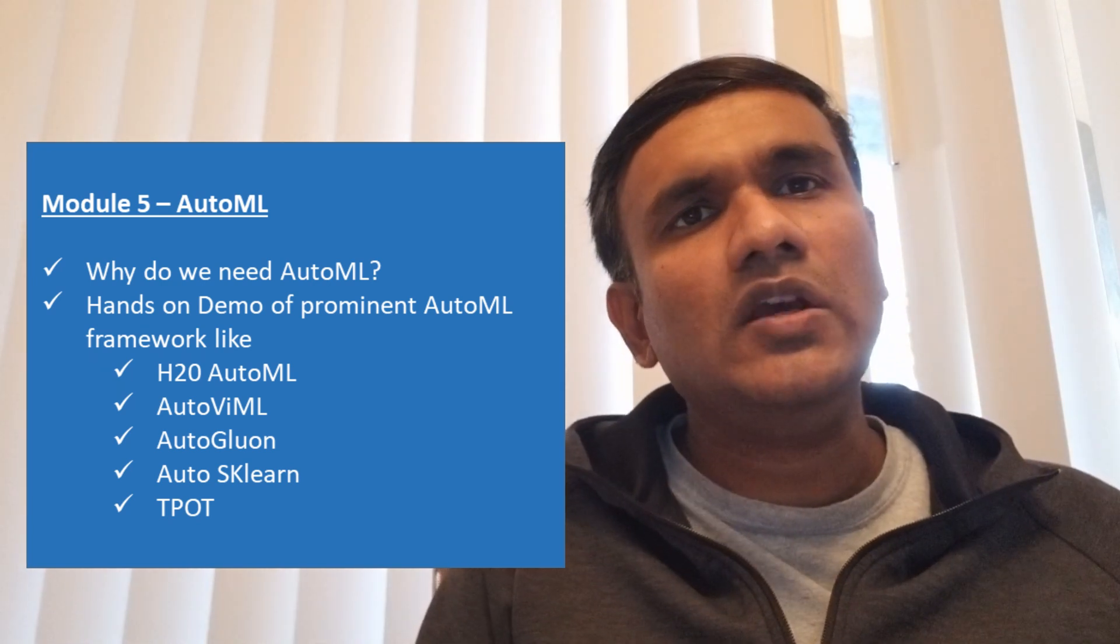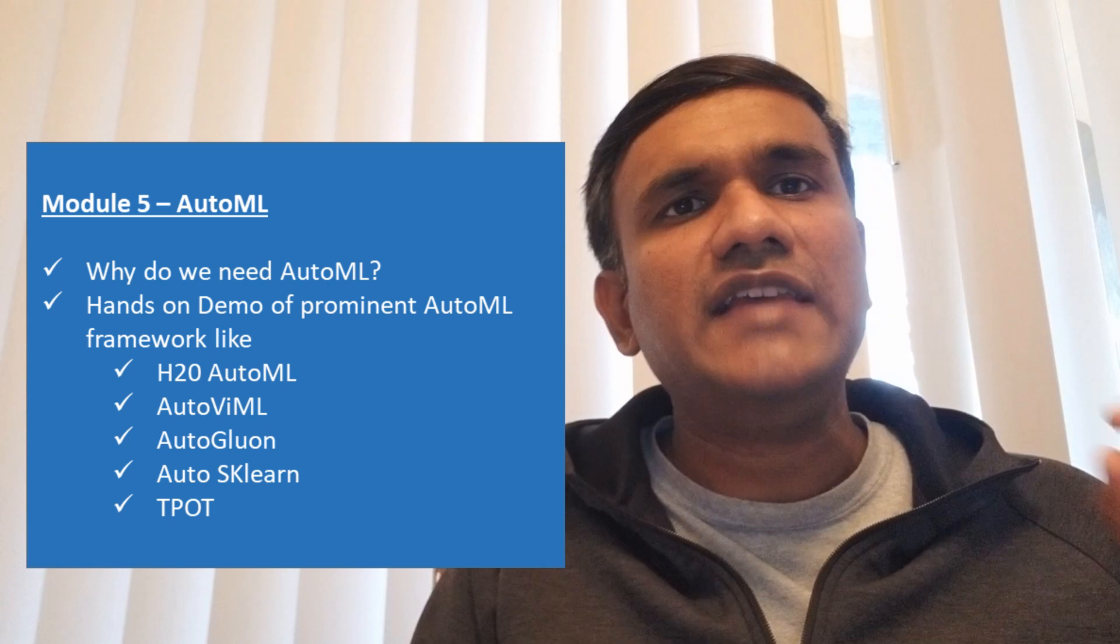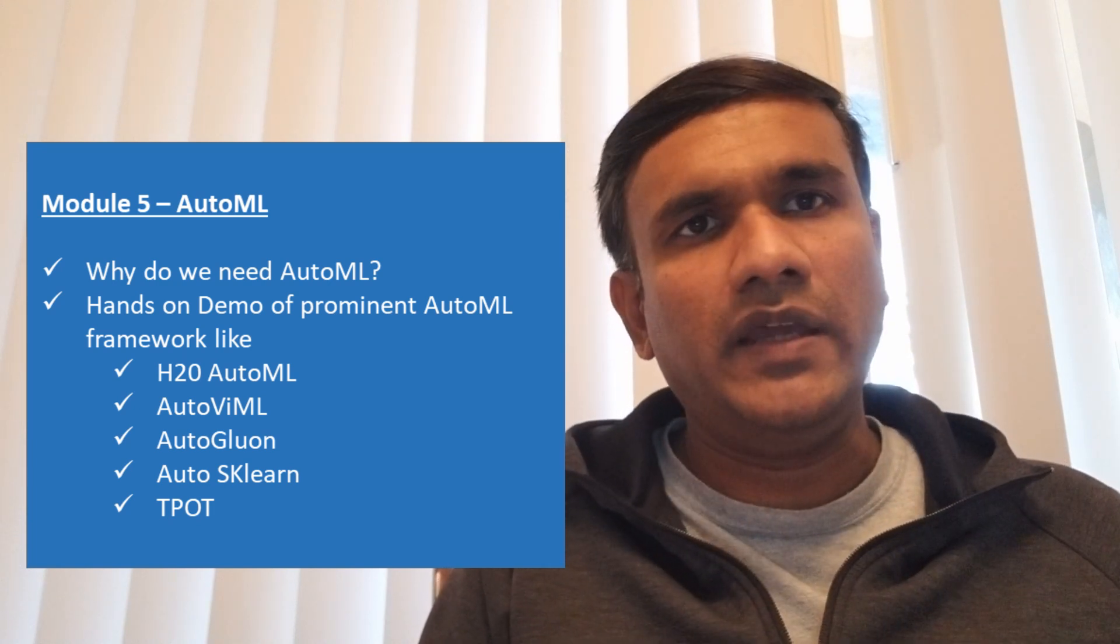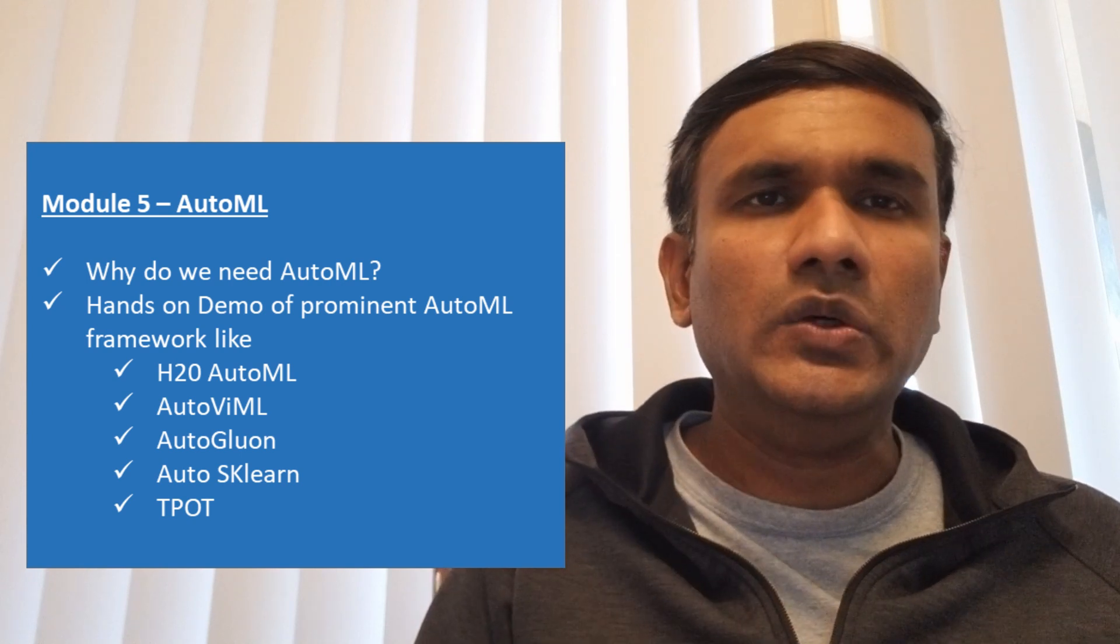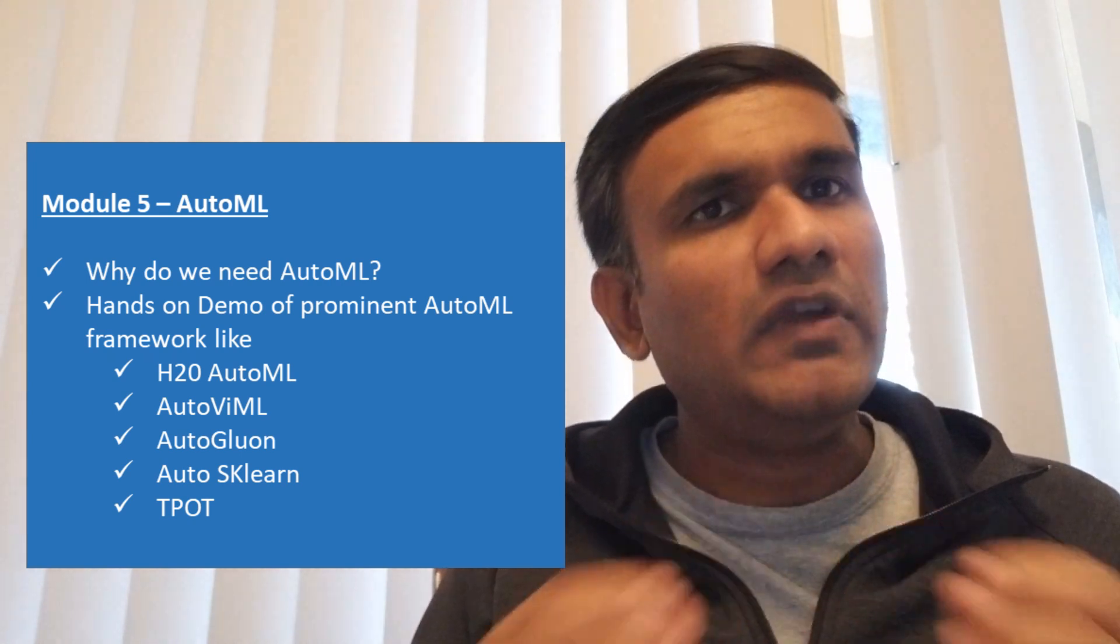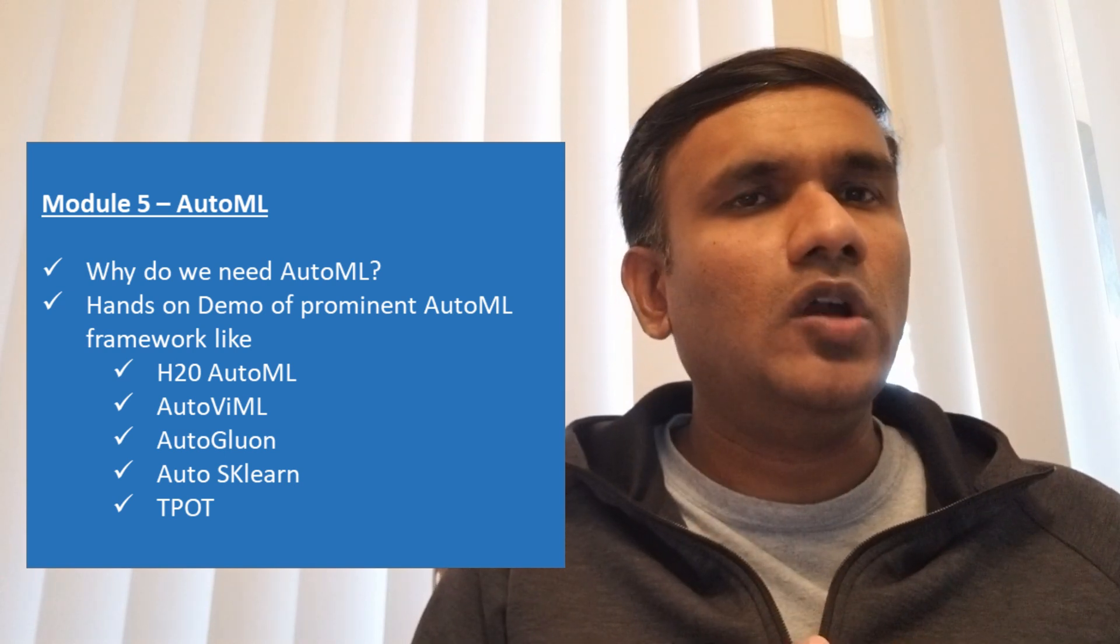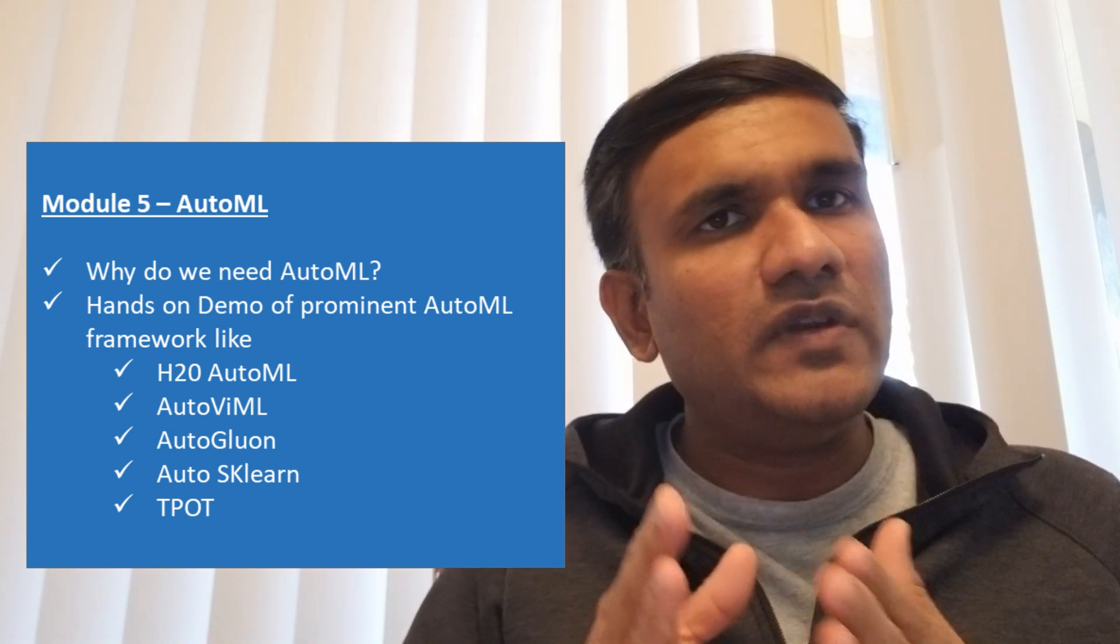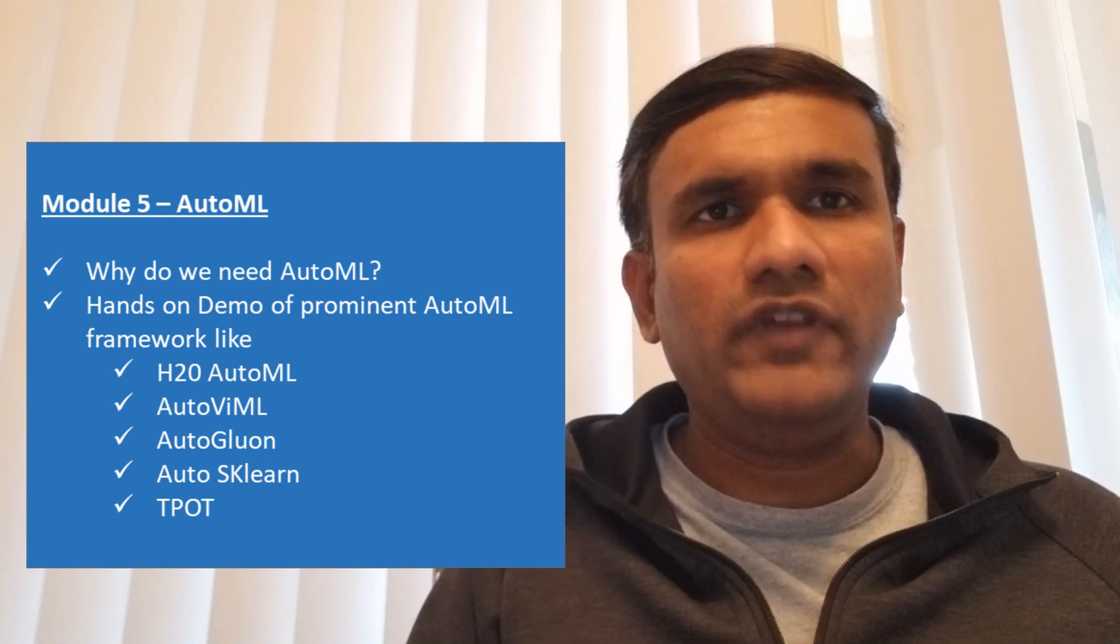In the fifth part, we'll be focusing on AutoML. One of the things I mentioned is accelerating your machine learning pipeline—how you can generate faster value. So we'll be talking about various AutoML frameworks that are available today that can help you accelerate your model development journey as well as your hyperparameter selection journey.